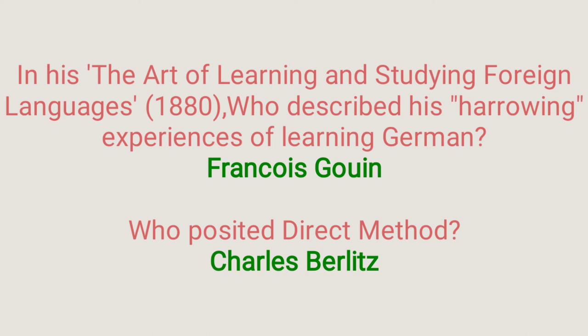In 'The Art of Learning and Studying Foreign Languages' (1880), who described his harrowing experiences of learning German? Answer is François Gouin. Who posited the direct method? Answer is Charles Berlitz. This method helped Gouin gain insights into the intricacies of language teaching and learning. The basic tenet of the Berlitz method was that second language learning is similar to first language learning.